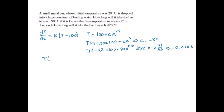So we have our equation T(t) is equal to 100 minus 80 times E to the negative 0.0253t. So if we solve when T(t) is equal to 90, we get that t is equal to 82.1 seconds.